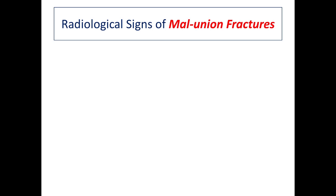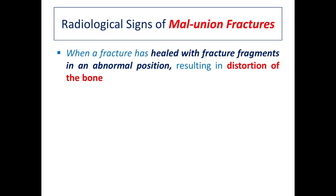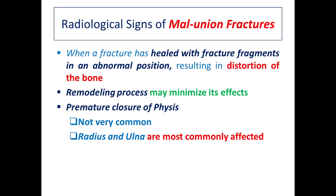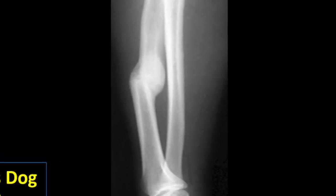The last topic is the radiological signs of malunion fractures — fractures in which the bone has not healed in proper anatomical configuration. Whenever a fracture heals with fragments in an abnormal position, there is distortion of the bone, though remodeling may minimize this effect. Malunion is not very common but mostly occurs due to premature closure of the growth plate or physis in young dogs, especially in the radius and ulna, resulting in angular limb deformity or radius curvus. This radiograph shows a fractured radius with malunion and physis compression during the growth period.